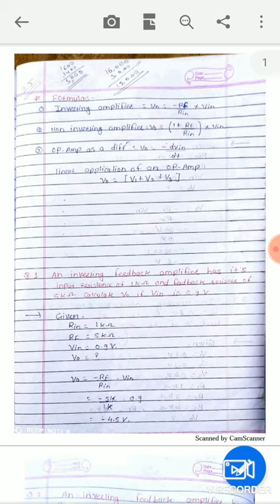Next, an inverting feedback amplifier has its input resistance of 1 kOhm and 5 kOhm. Calculate Vo if Vin is 0.9 volt. Given terms are Rin 1 kOhm, RF 5 kOhm, feedback resistance is RF, and input voltage. We will calculate Vo.